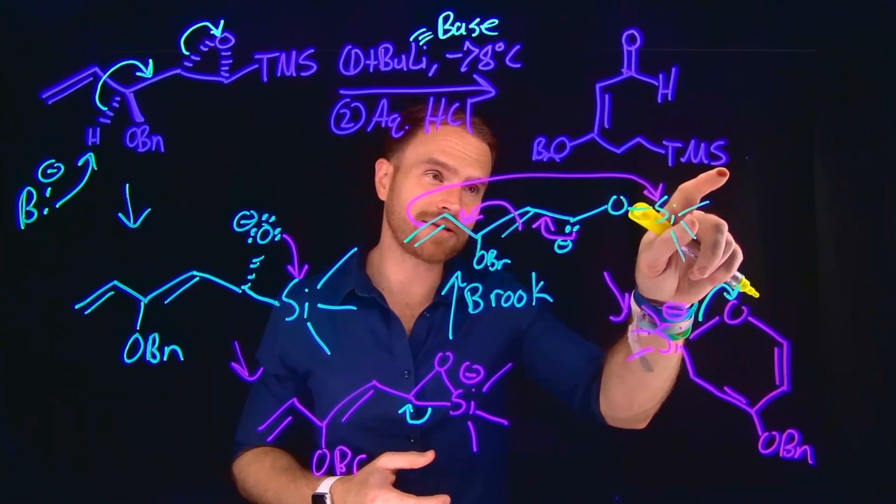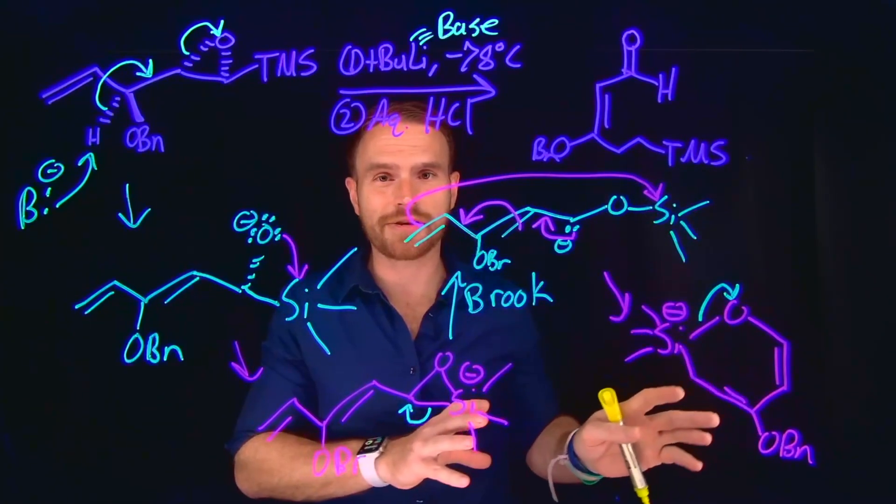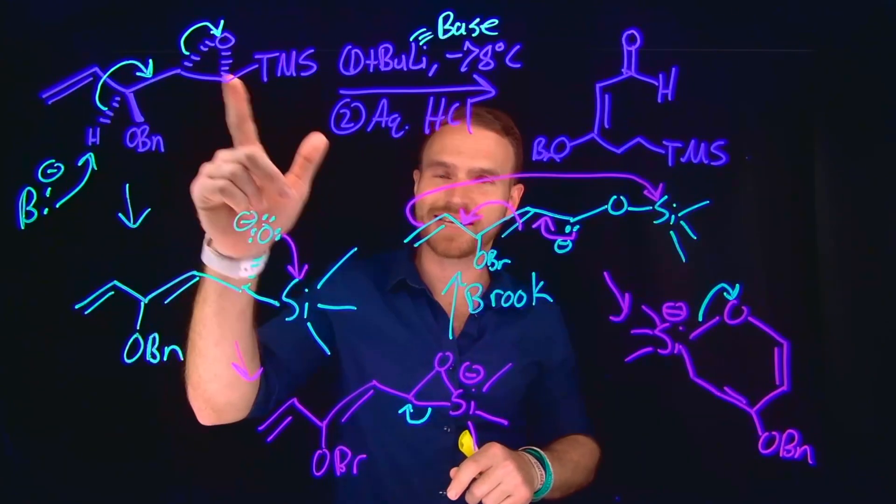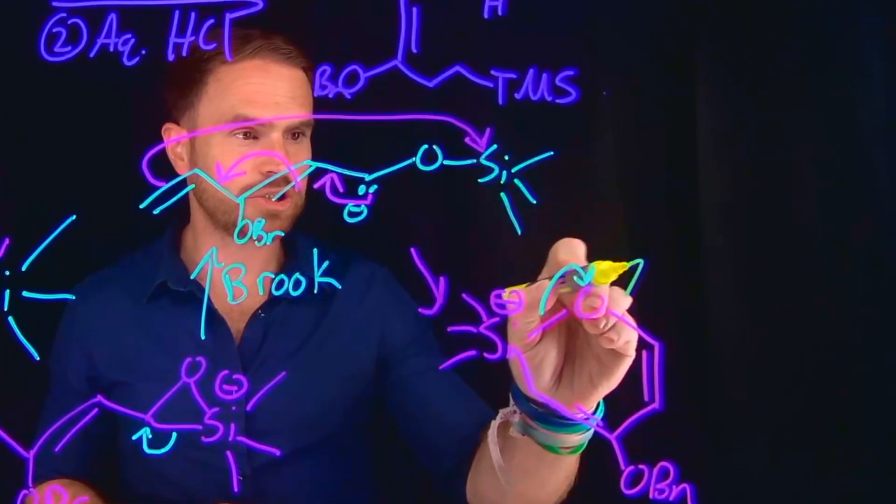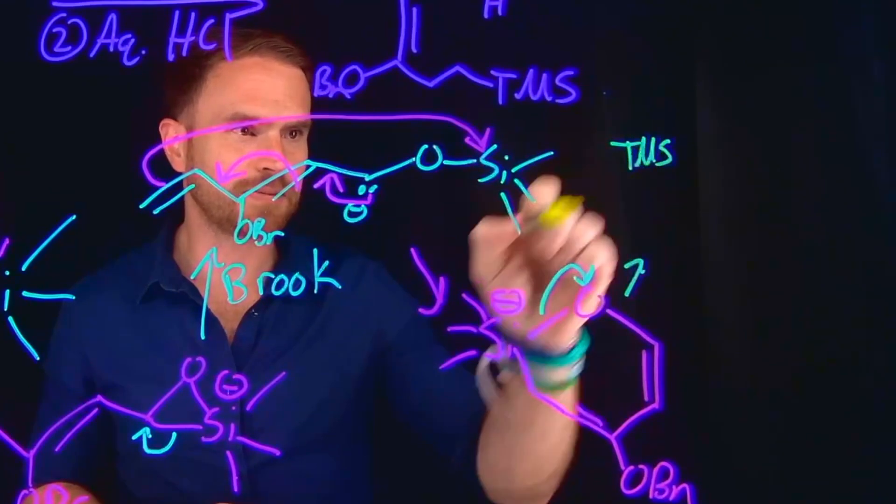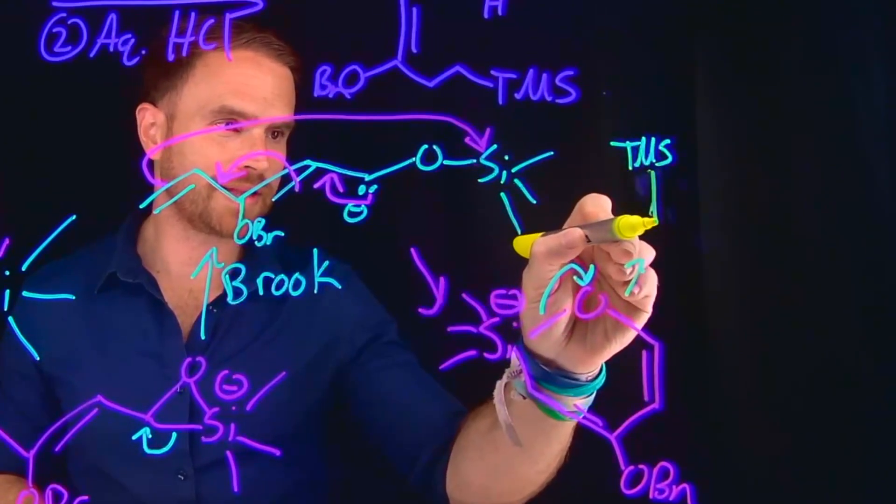And it's actually how we get this trimethylsilyl group in our product to be on the opposite side of the molecule, whereas it started next to this oxygen. So now the product of this transformation is going to contain our TMS located at this position, attached to a carbon at this position.